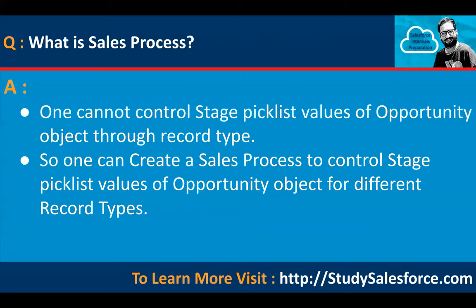What is sales process? One cannot control the stage picklist value of the Opportunity object through record type alone. One can create a sales process to control the stage picklist values of the Opportunity object for different record types.